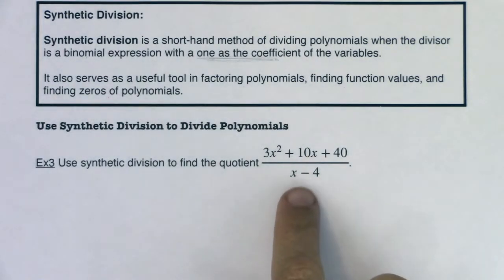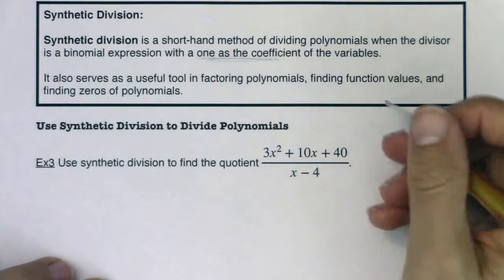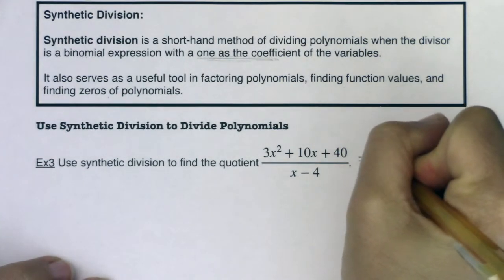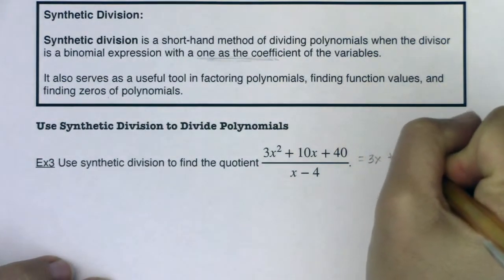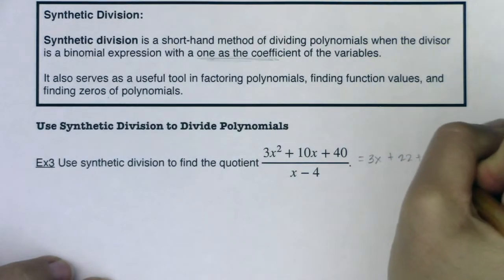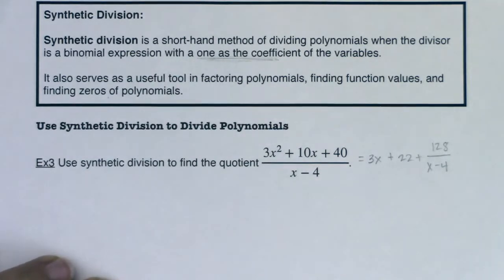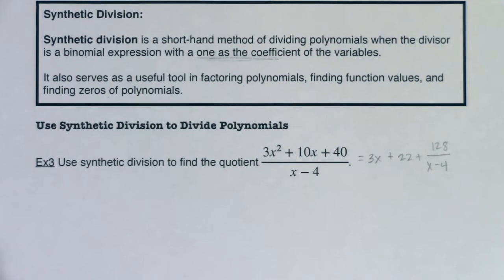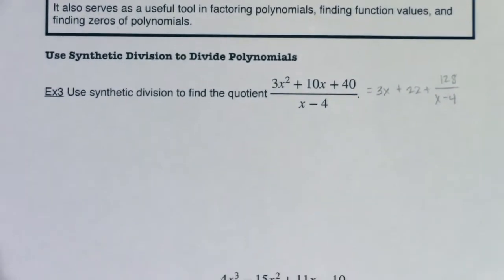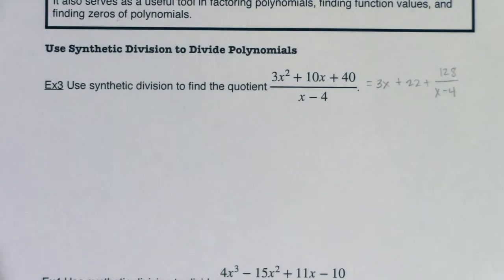Now this is the exact same quotient that we had in example one. So we already know the answer, right? We know that we should get 3x plus 22 plus 128 over x minus 4. That was our answer from example one. It's not going to change just because we use synthetic division. So let me show you how to set up synthetic division. I'm going to move this up so I have enough space. And then just trust me on a couple things and we'll start to see the patterns.